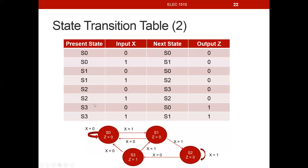Let's transition to the next slide and start filling in our table from the rest of the state diagram. We've already accounted for the present state of S0. So when we're in state S1 and x is a 0, our next state is S0. When we're in state S1 and our input x is a 1, our next state is S2. The output z, when we're in state S1, no matter what our inputs are, will always be a 0.